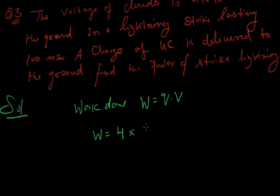Work done W is equal to QV. Q is given 4 coulomb into V is given 4 into 10 raised to the power 6 volt, that is equal to 16 into 10 raised to the power 6 joule. It is the work done.